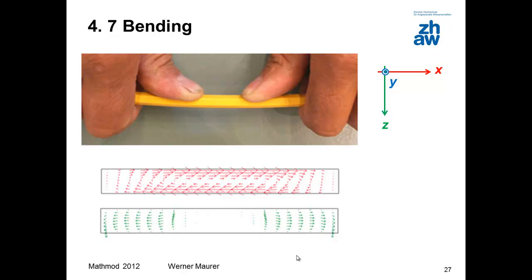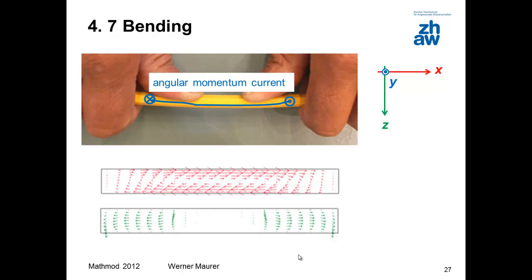Bending can be explained in two different ways. The momentum flow from the thumbs to the forefingers induces a net current of the other component, as a result of the symmetry of the stress tensor. The lateral momentum flow creates sources and sinks for the angular momentum. Since the sources feed the sinks, an angular momentum flows at a right angle to the reference direction. This angular momentum flow is constrained by a further momentum flow.